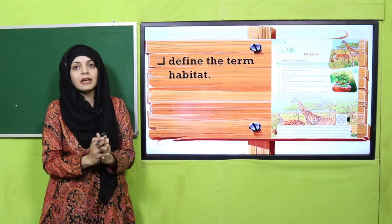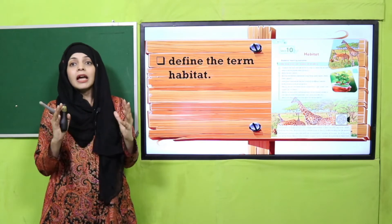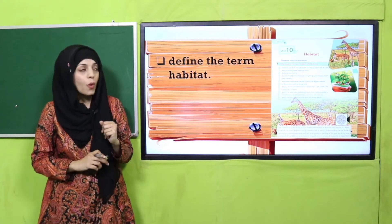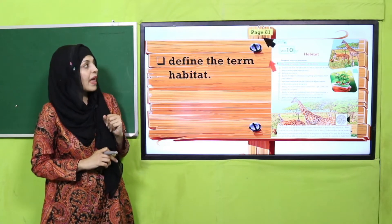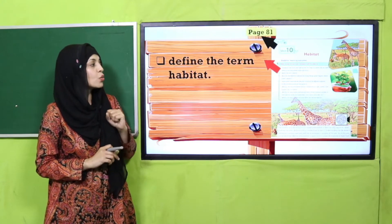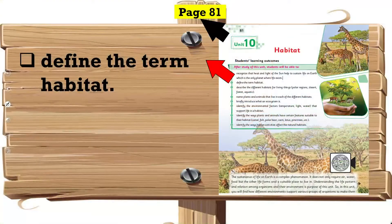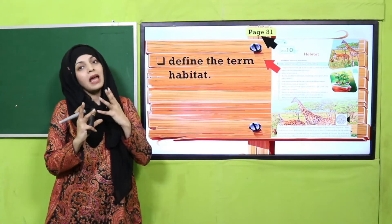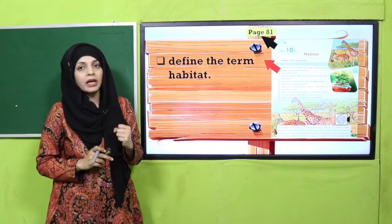Now let's look at today's objective, which is given on page number 81. Today the students will be able to define the term habitat. Every child watching will be able to answer: what is a habitat?